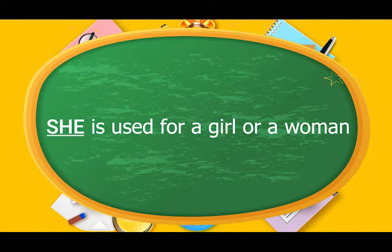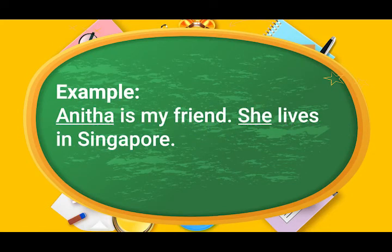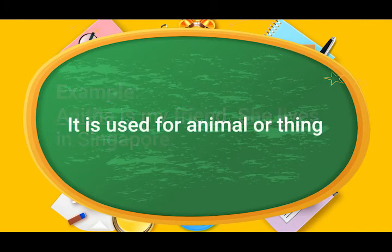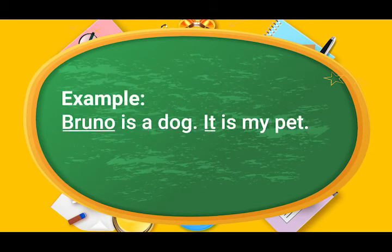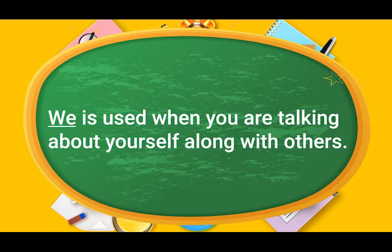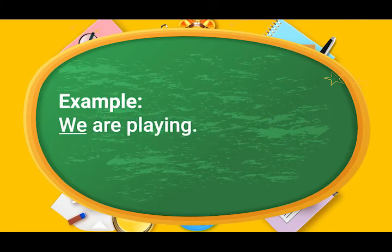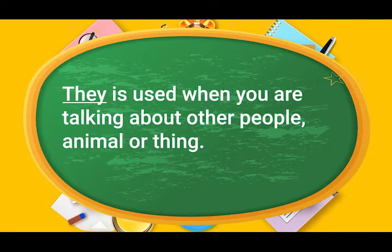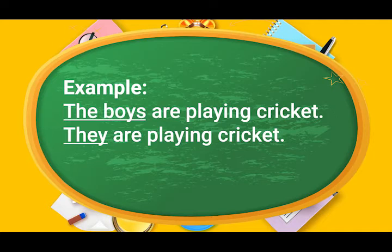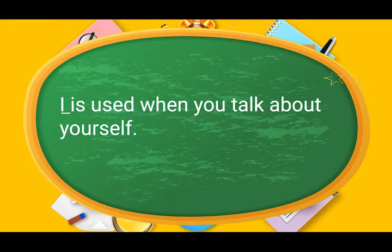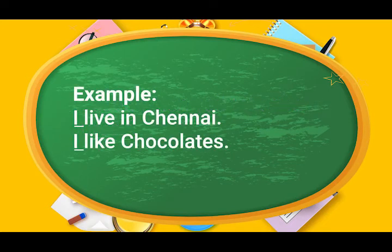She is used for a girl or a woman. For example, Anita is my friend. She lives in Singapore. Here too, Anita is replaced with pronoun 'she'. It is used for an animal or thing. Bruno is a dog. It is my pet. Bruno is replaced with pronoun 'it'. We is used when you are talking about yourself along with others. Kathy and I are playing. We are playing. Kathy and I is replaced with pronoun 'we'. They is used when you are talking about other people, animal or thing. The boys are playing cricket. They are playing cricket. Here, the boys is replaced with pronoun 'they'. I is used when you talk about yourself. I live in Chennai. I like chocolate.